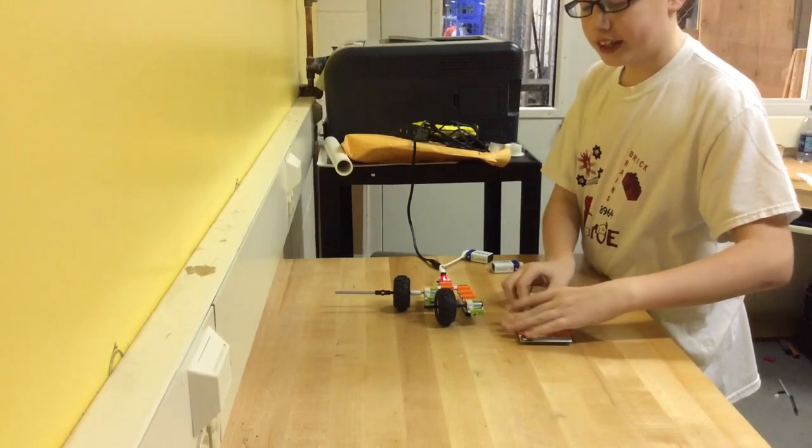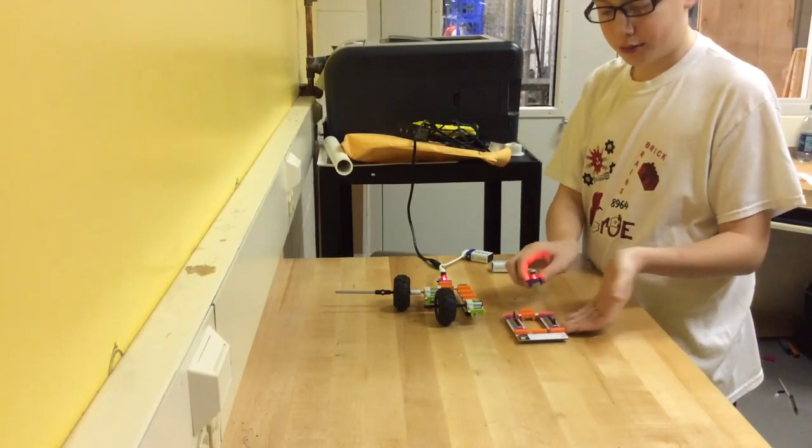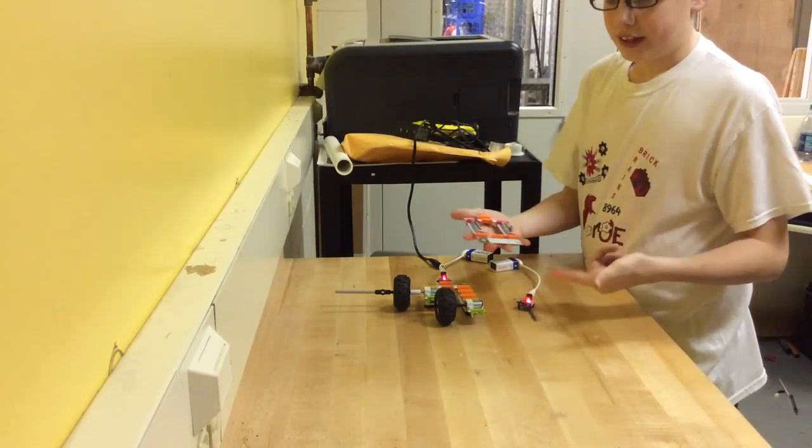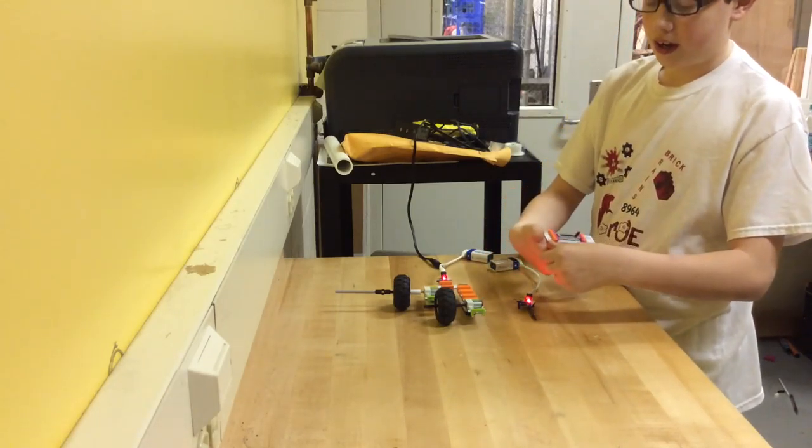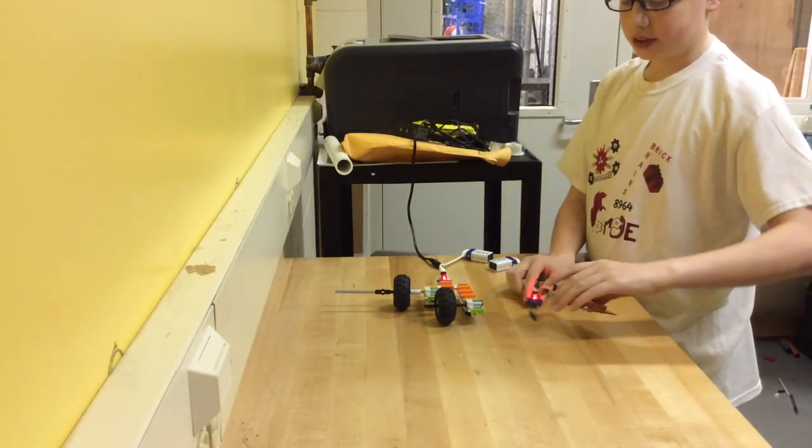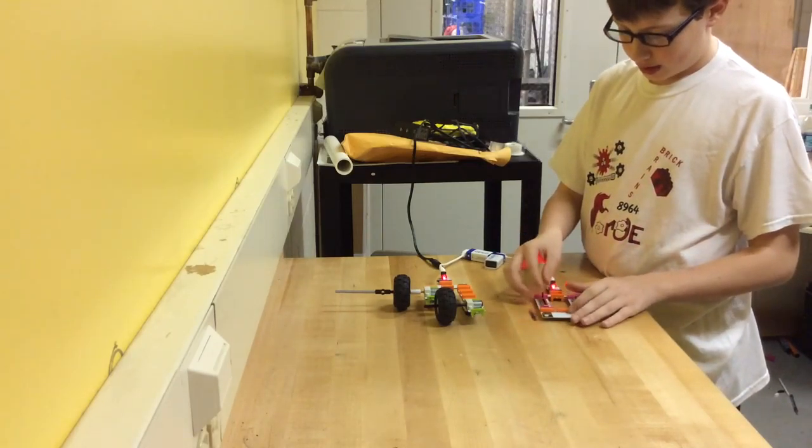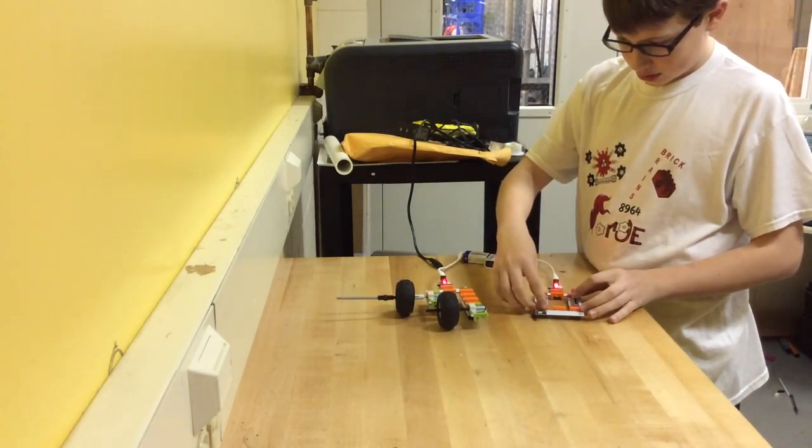And to make this work we need this remote control right here. And to make this remote control we need power, a wireless transmitter, a fork, and two slide inverters. And connect it like this and move it. And it can move like so.